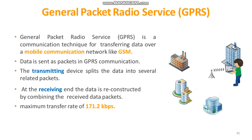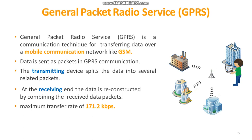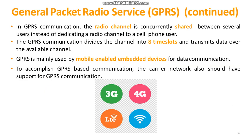The last example is GPRS — a communication technique for transferring data over a mobile communication network like GSM. Data is sent as packets: the transmitting device splits the data into several packets, and the receiving device reconstructs those packets. The maximum transfer rate is 171.2 kilobits per second. The radio channel is concurrently shared among several users instead of being dedicated to a single user, and GPRS divides the channel into eight time slots to transmit data over available channels.